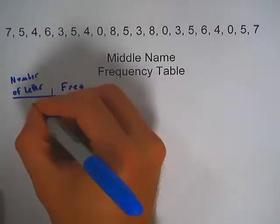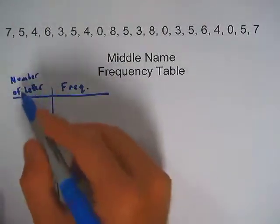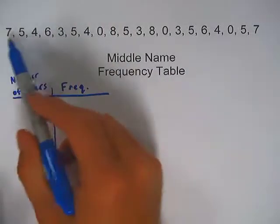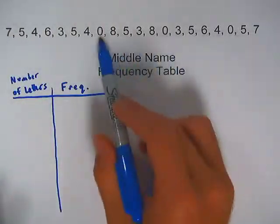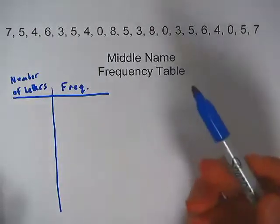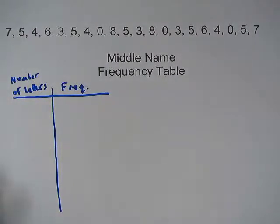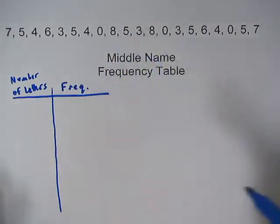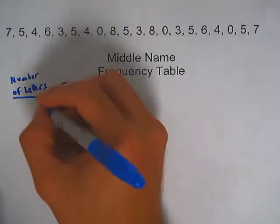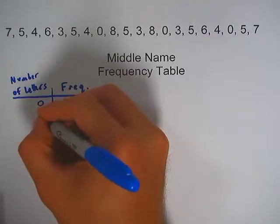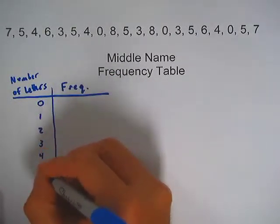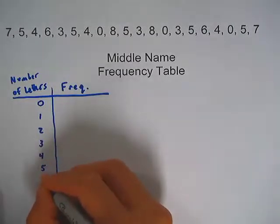Now I'm going to list the possible number of letters in this column. So if I look here, the shortest middle name was 0, which means that they didn't have a middle name. And the largest value was 8. So we had a couple people with a longer middle name of 8 letters. So what I'm going to do is in this column write down the numbers from 0 to 8.